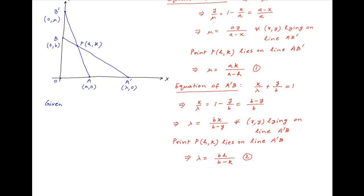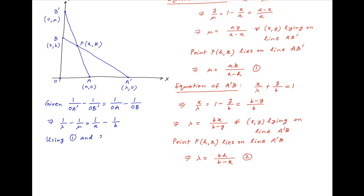Now we are given that 1/OA' minus 1/OB' is equal to 1/OA minus 1/OB. This can also be written as 1/λ minus 1/μ is equal to 1/A minus 1/B. Substituting the values of λ and μ obtained in Results 1 and 2, we get (B minus K)/(BH) minus (A minus H)/(AK) is equal to 1/A minus 1/B.